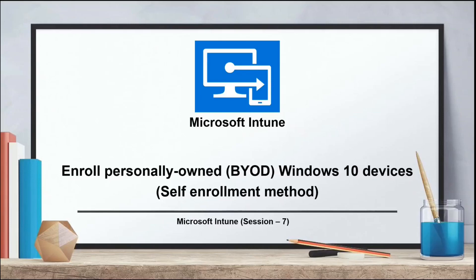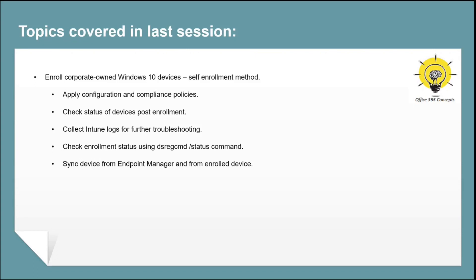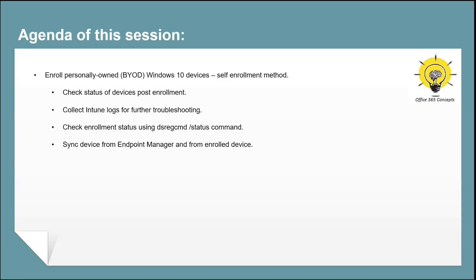Hi guys, I hope you all are doing well and welcome to our Phase 365 concepts. This is the seventh video of Microsoft Intune series. In the last video, we enrolled a corporate-owned Windows 10 machine using the self-enrollment method. In this video, I will demonstrate how to enroll a personally-owned Windows 10 machine to Microsoft Intune, how to check the status of the enrolled device, how to sync a device manually from Endpoint Manager and from the device itself, and how to collect logs to troubleshoot a device enrollment failure.